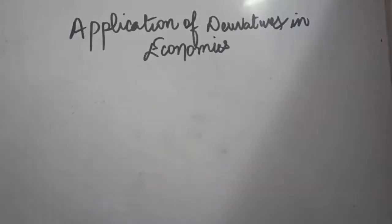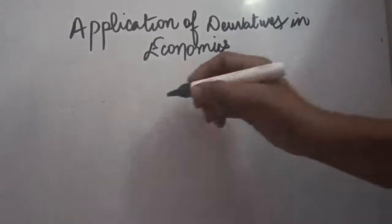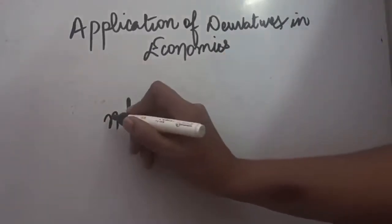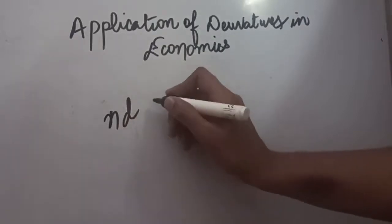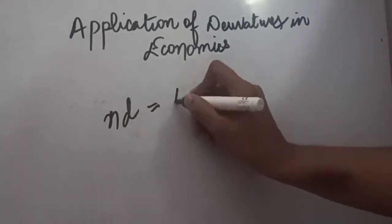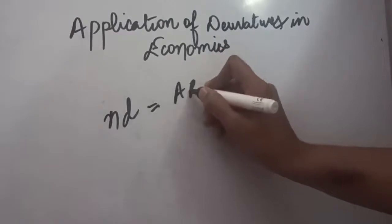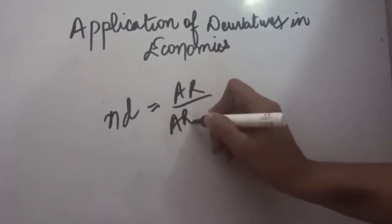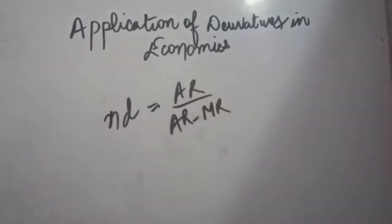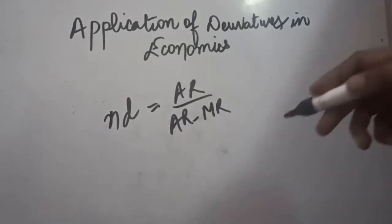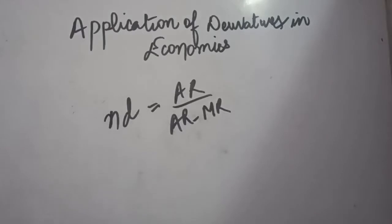With the help of derivatives we can also show relationships. The elasticity of demand equals average revenue divided by (average revenue minus marginal revenue). You would have done this in the subject of economics as well, so elasticity of demand can be calculated with this method too.